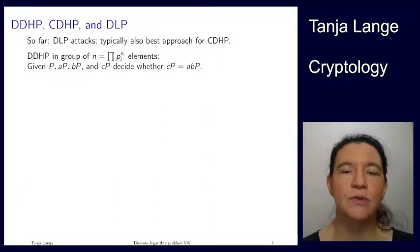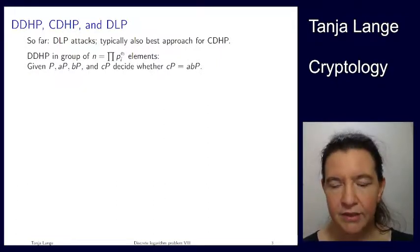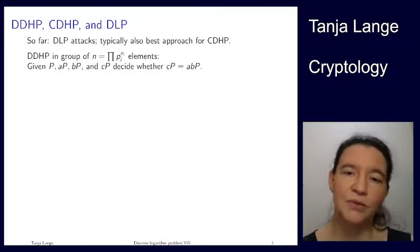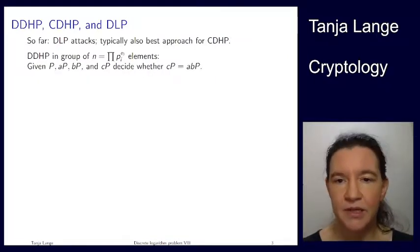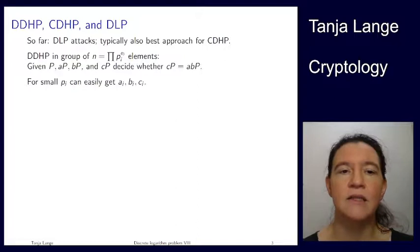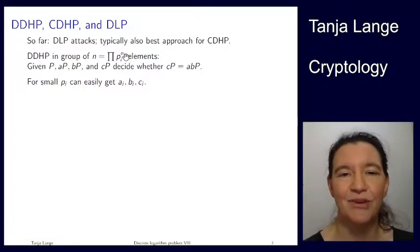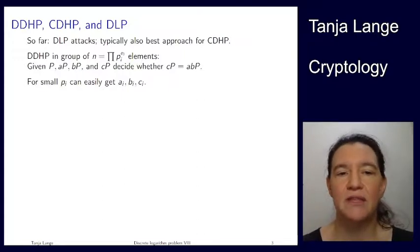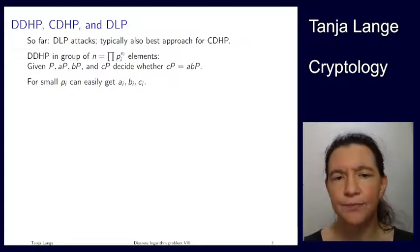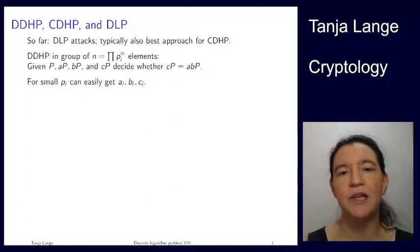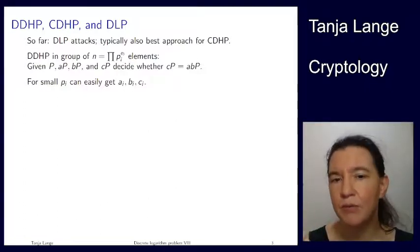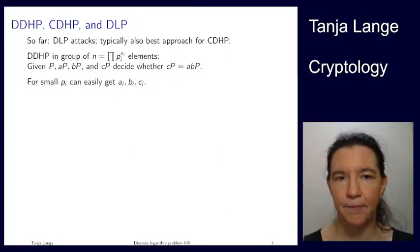Now let's look at this with all the knowledge we've just accumulated — in particular from the last two lectures on the Pohlig-Hellman attack. Pohlig-Hellman tells us it's very easy if there is a small prime in the factorization of n. So if there's some small prime p_i, you can very easily get A_i, B_i, C_i — those are A mod p_i, B mod p_i, and C mod p_i.